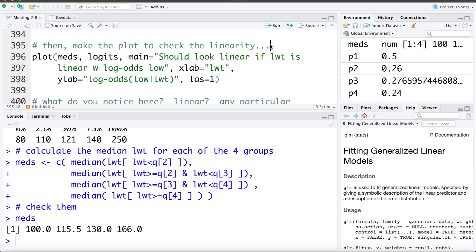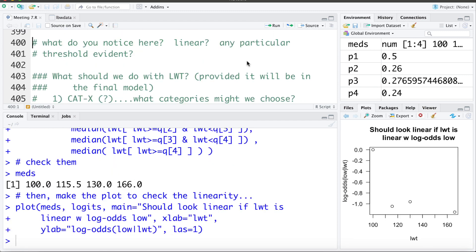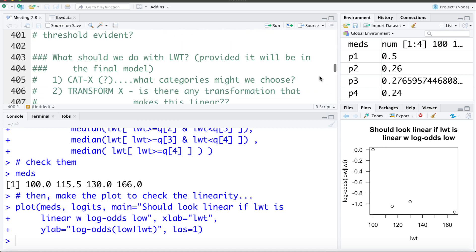Now in order to check linearity we can make a plot of these logits or the log odds versus the midpoints or the medians of each of these groups. So I'm going to make that plot here and recall that this should look roughly linear if the relationship between LWT and the log odds of low birth weight is linear. So I'll make that plot here. Now what do you notice? Does this look linear? Not really. It doesn't look like a line would fit through those very well.